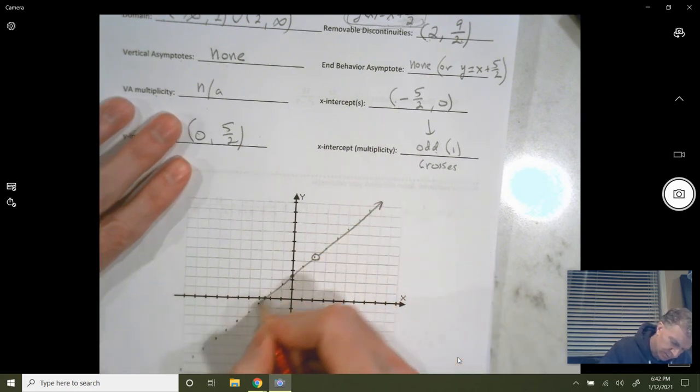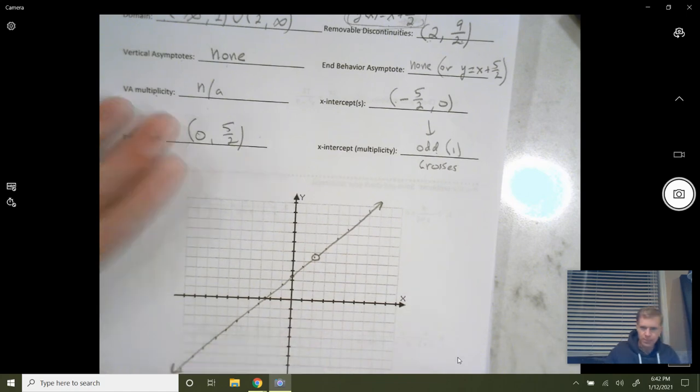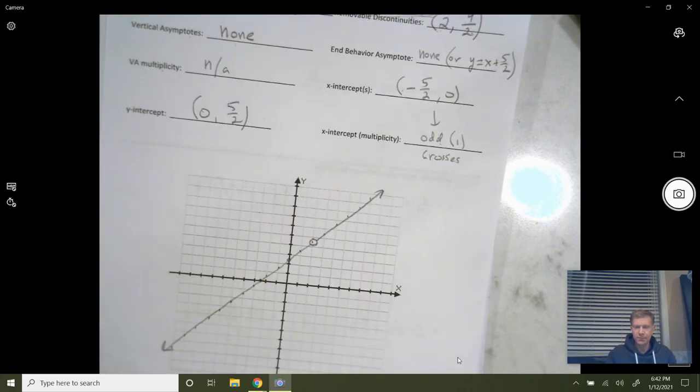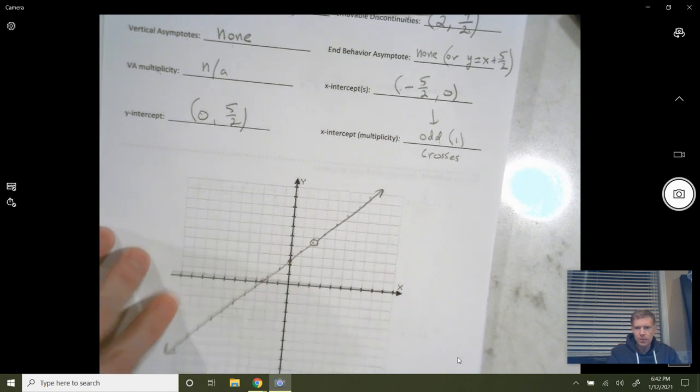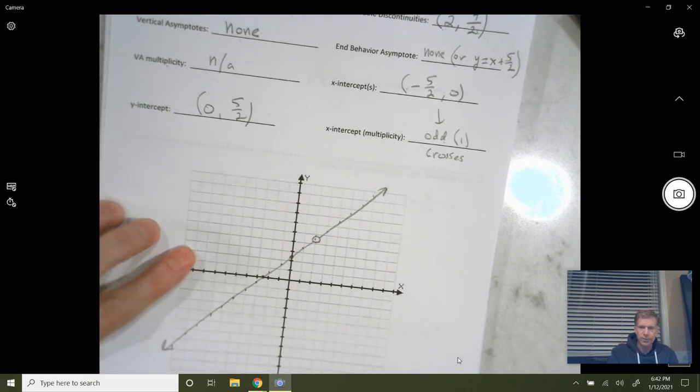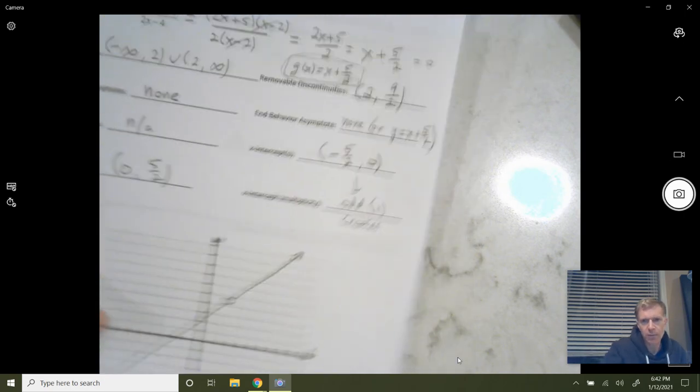Cross through. And that's your graph. It looks different from the other ones, because you end up with something that's really just linear. I hope that was helpful. Thank you for watching.